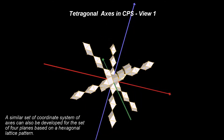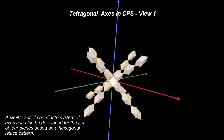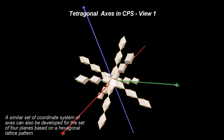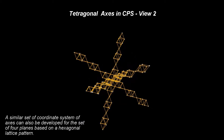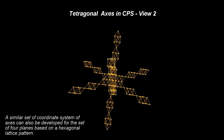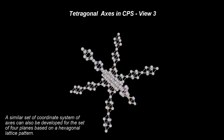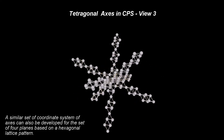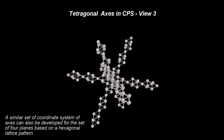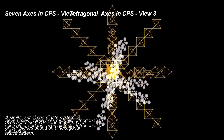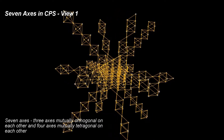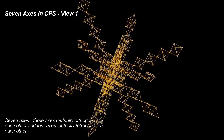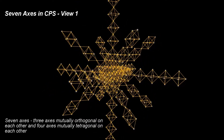As seen already, the intersection of the orthogonal planes corresponding to the square pattern form the Cartesian coordinate system of axes. A similar set of coordinate axes can also be developed for the four sets of planes based on a hexagonal lattice pattern. The intersection of these four planes forms four tetragonal axes. Again, these axes are lines, but they are formed by a different pattern than the pattern encountered in the orthogonal case.